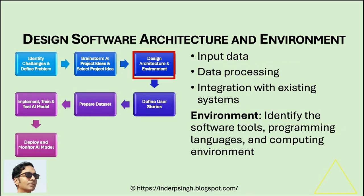Phase 3: Design software architecture and environment. This includes determining what input data the AI model will need, how the model will process that data, and how the model will integrate with existing systems. For example, in the AI-powered test case prioritization project, your architecture might include data ingestion from previous test runs, a model training component, and a user interface for displaying prioritized test cases.